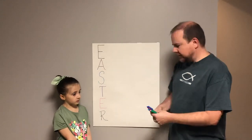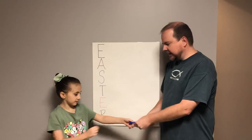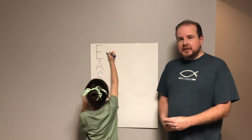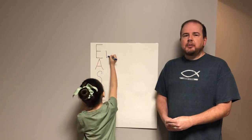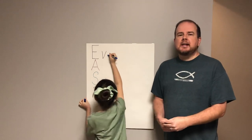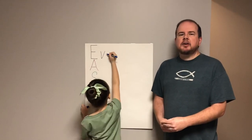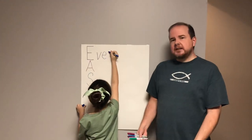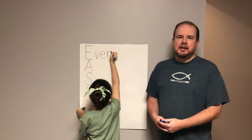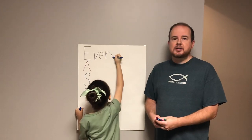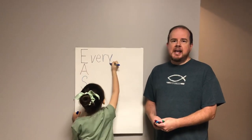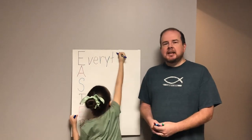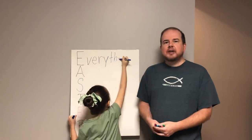The first letter in the word Easter is the letter E. E is for everything. The Bible says in Genesis 1:1, in the beginning God created the heavens and the earth. He created everything including the sun, the moon, the stars, plants, trees, animals, and man. He created everything and was pleased with all that he had created.